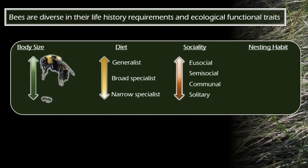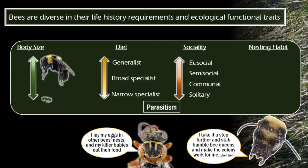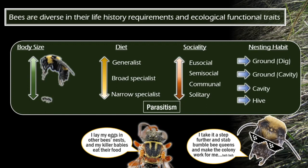For sociality, bees vary greatly in their social groupings. Some are eusocial, like honeybees and bumblebees, with a queen and many workers. But most bees are actually solitary — they collect their own pollen and provision their own nest themselves. There's also parasitism: kleptoparasites enter another bee's nest, and the parasitic larvae kill the host larvae and eat all its food. Parasitic bumblebees take it a step further — they enter another bumblebee's nest, take out the queen, and make all the workers work for them.